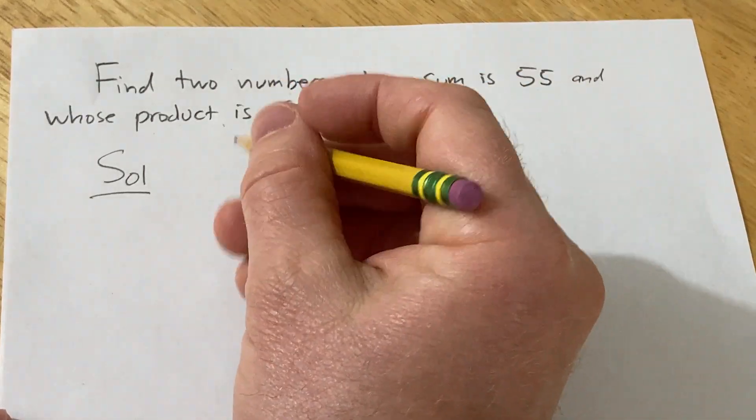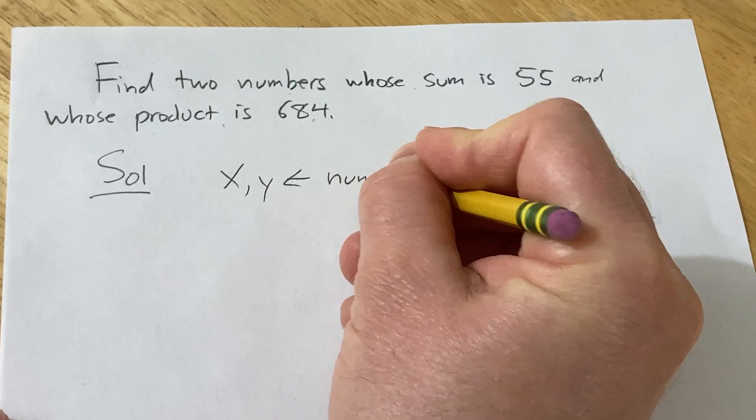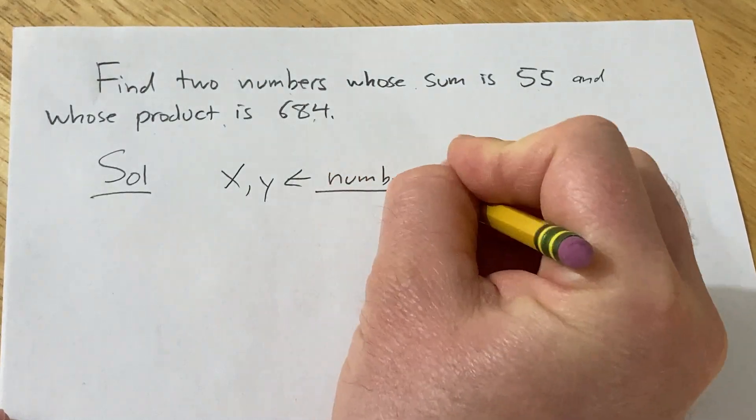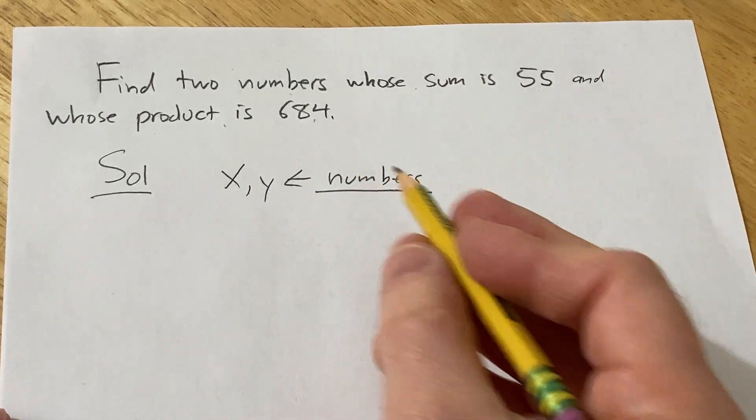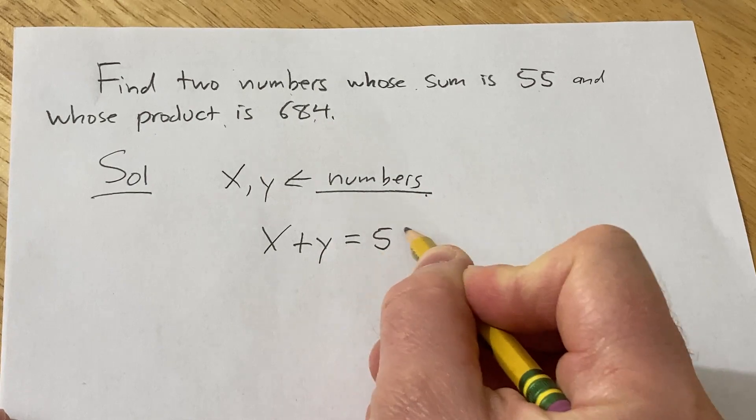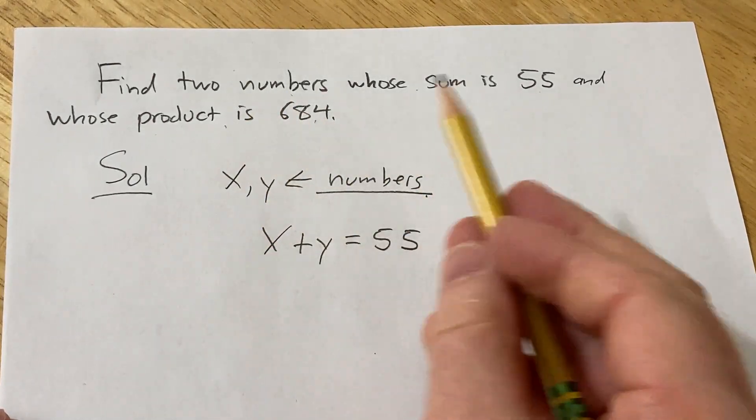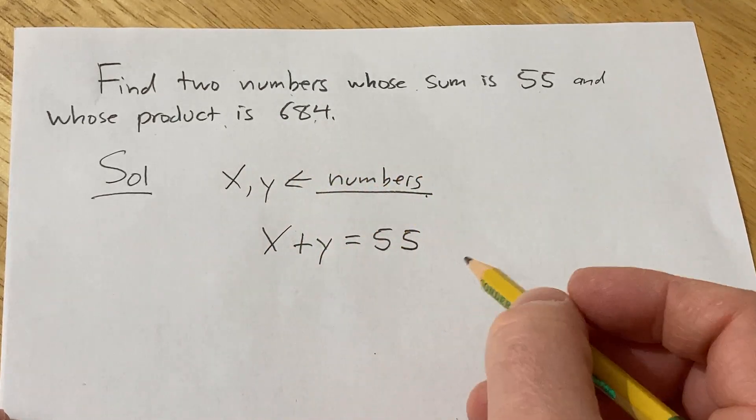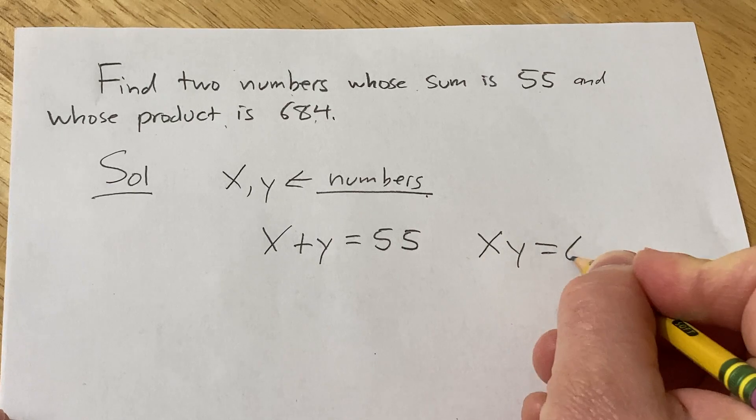So let's use some variables. Let's say that x and y are the numbers. We know that they add to 55, so we can express that with an equation: x plus y equals 55. We also know that their product is 684, which means they multiply to 684. So we can write that as x times y equals 684.